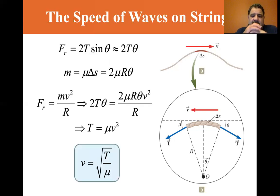So that gives us the velocity squared is T divided by mu. So if v squared equals T divided by mu, then v equals the square root of T divided by mu. So what does that mean?